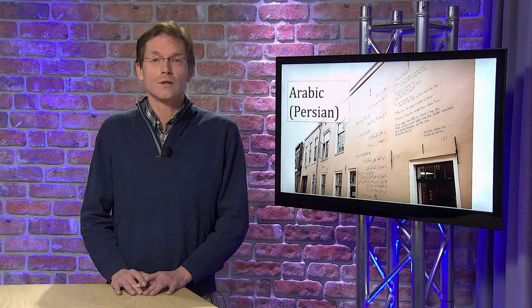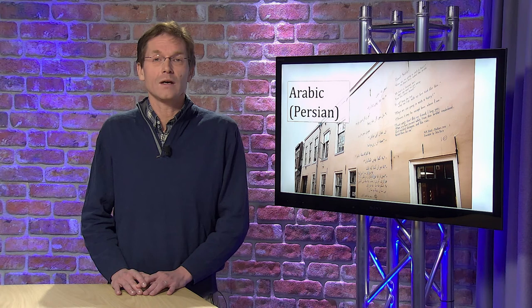This poem, "Good Journey," for example, is written in Persian, a language that is not at all related to Arabic, but belongs to the same linguistic family as Latin, Greek, and even Dutch and English.